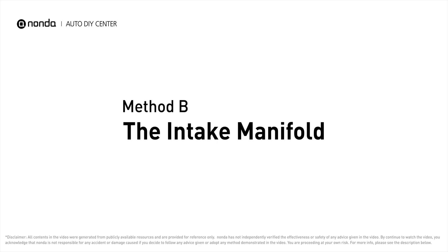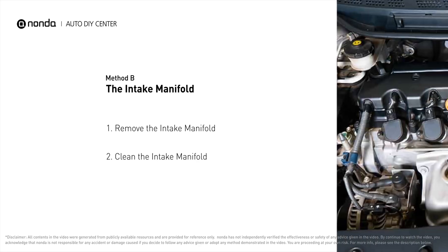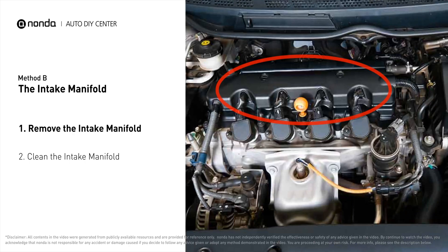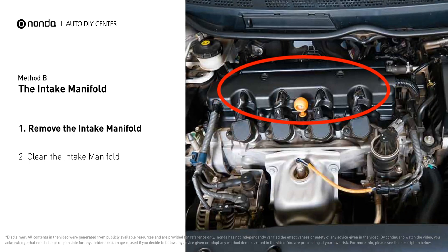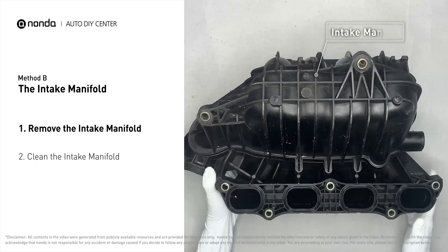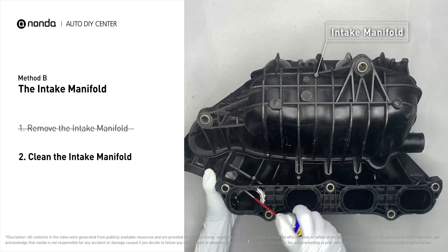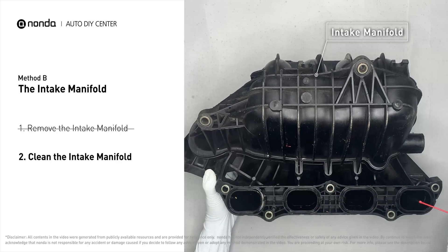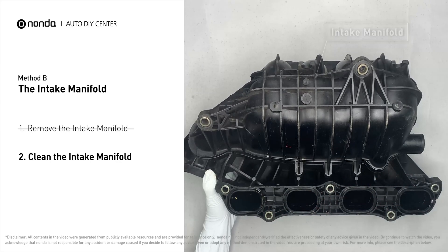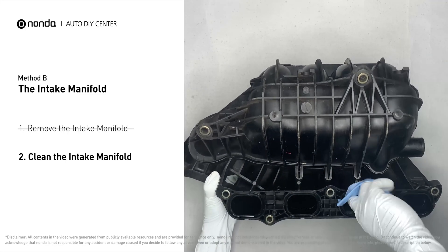Method B: the intake manifold. The intake manifold sits on top of the engine and plays a key role in the combustion process. First, carefully remove the intake manifold from the engine. Use WD-40 cleaner to clean up the crud inside the intake manifold and wipe it well to make sure all the carbon buildup is removed.